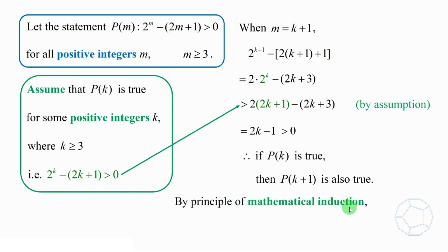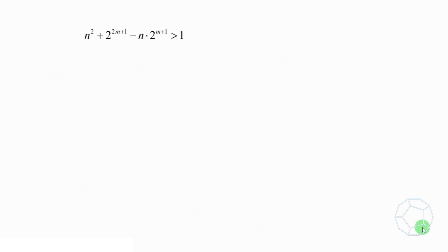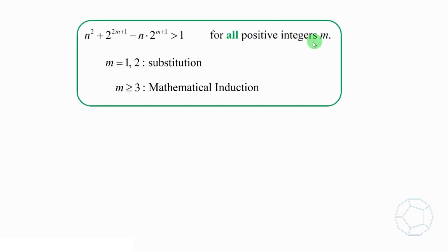By principle of mathematical induction, p of m is true for all positive integers m, where m is larger than or equal to 3. Up to here, we have checked that this expression is larger than 1 by 2 methods. For m equals 1 or 2, we used substitution. For m larger than or equal to 3, we used mathematical induction. In other words, this statement is true for all positive integers m.